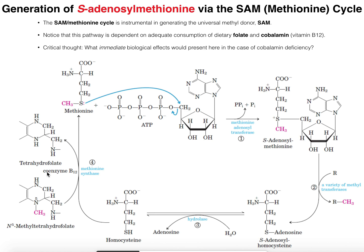If you resupplement coenzyme B12 or folate, depending on which one is deficient, you're going to raise the activity of methionine synthase back to normal and be able to convert homocysteine to methionine — resynthesize S-adenosylmethionine — and this whole cycle will work at maximum efficiency. Hopefully you learned a lot; please make sure to like this video and subscribe to the channel for future videos and notifications. Thank you very much.